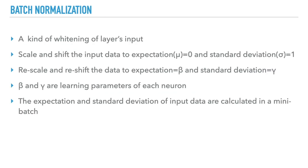To solve these problems, Google proposed a batch normalization algorithm. It is a kind of whitening of the layer's input. It scales and shifts the input data so that the expectation equals zero and the standard deviation equals one. Then it rescales and reshifts the data to expectation equals beta and standard deviation equals gamma, where beta and gamma are learning parameters of each neuron. The expectation mu and standard deviation delta of the input data are calculated in a mini-batch — that's why it's called batch normalization.